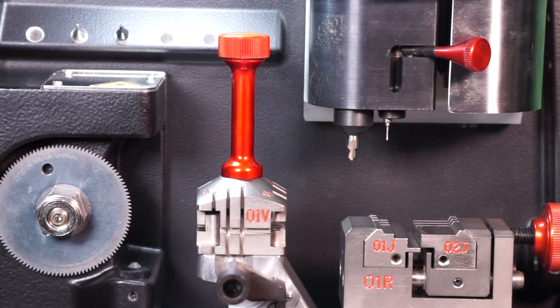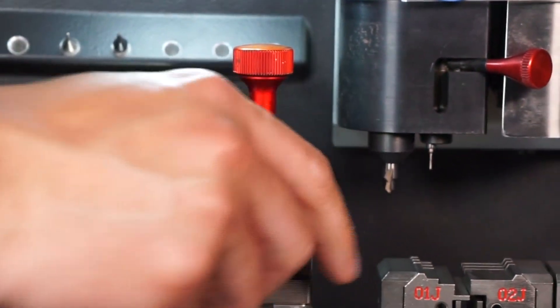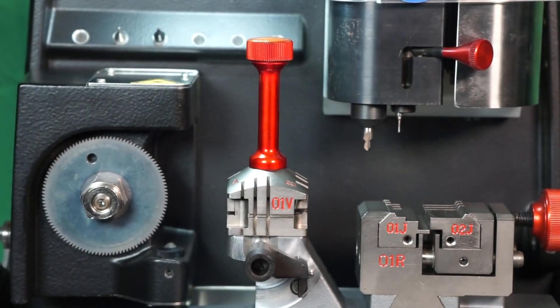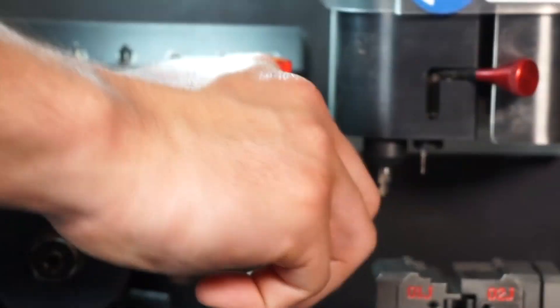As you can see, it's very easy to rotate, and once you get to the specific clamp side that you need, you can then clamp the key in. This machine features clamp side C.